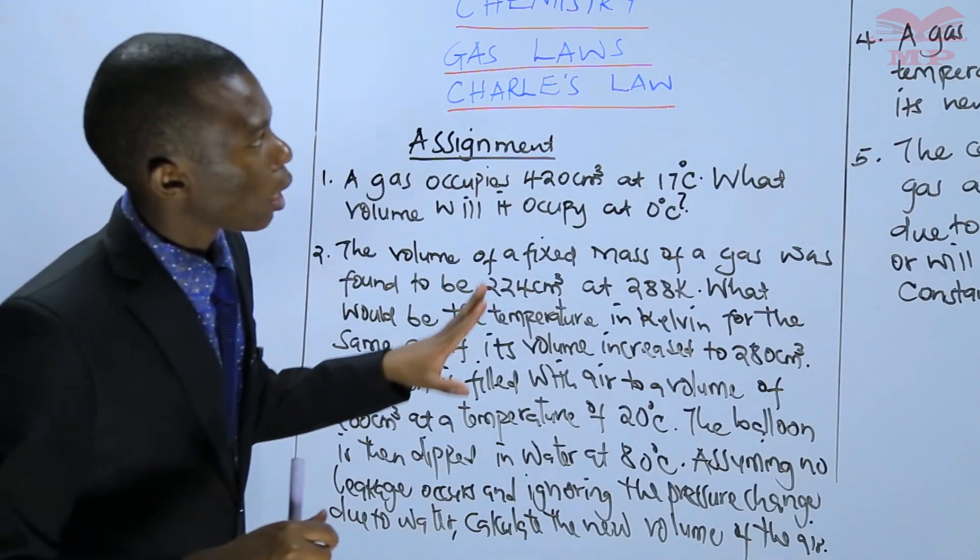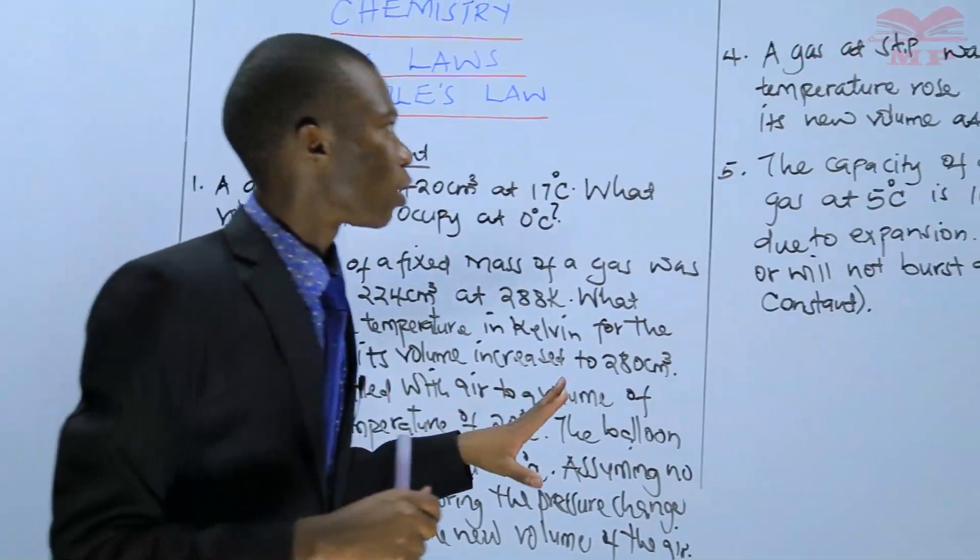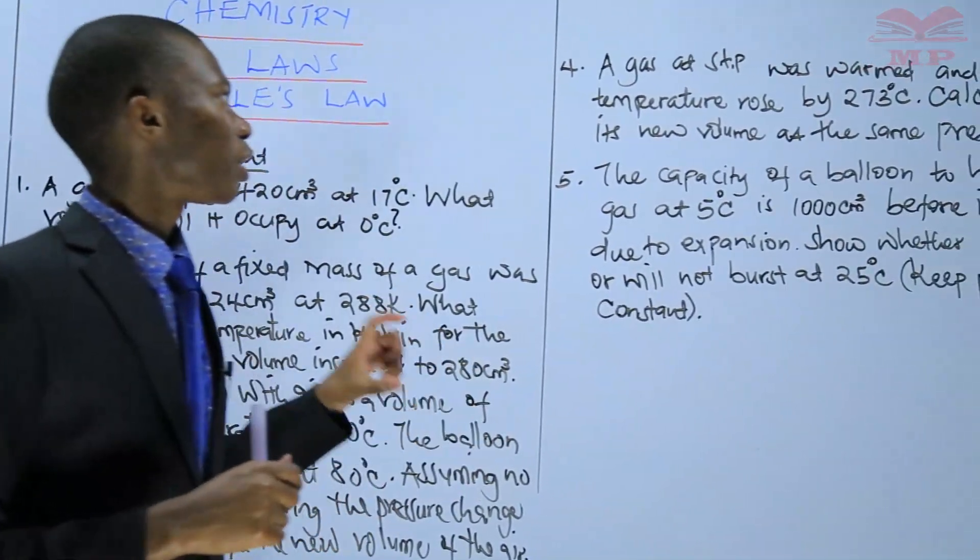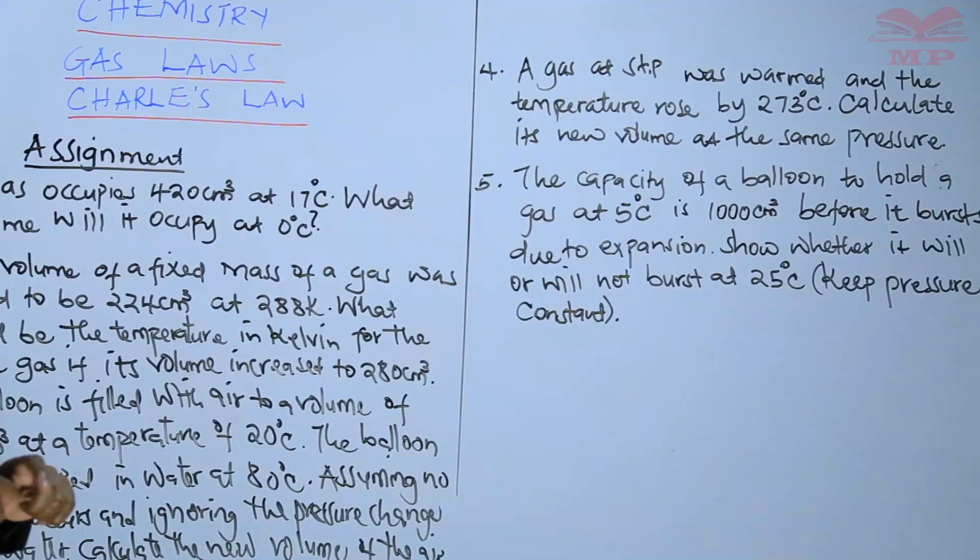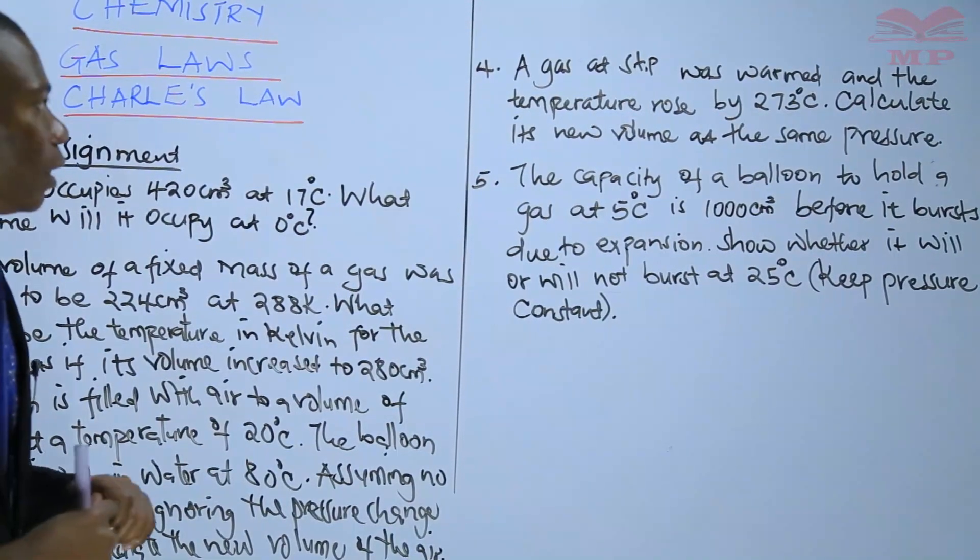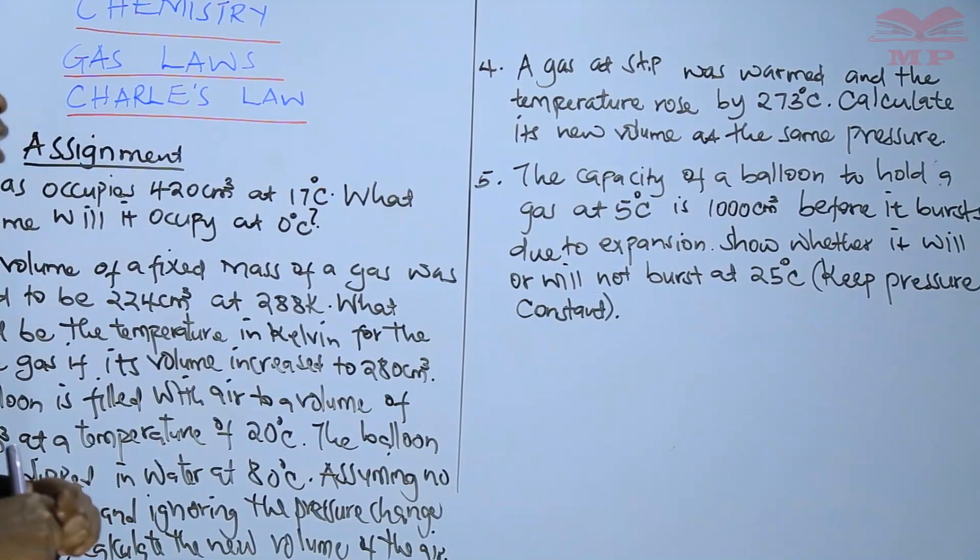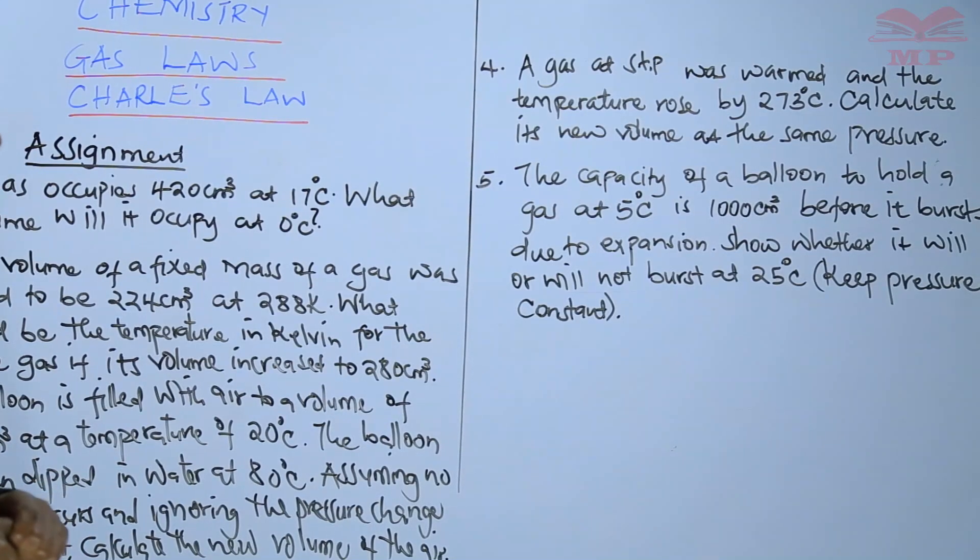Number four, a gas at STP was warmed and the temperature rose by 273 degrees Celsius. Calculate its new volume at the same pressure.